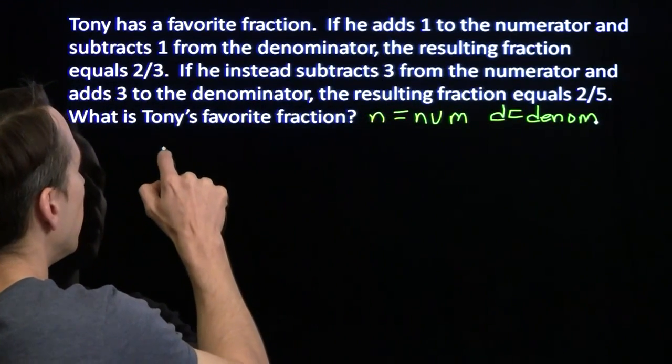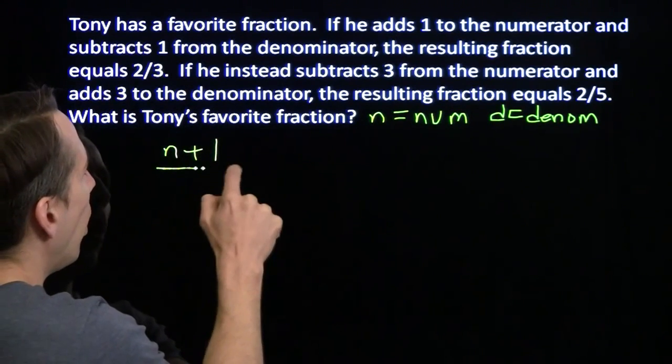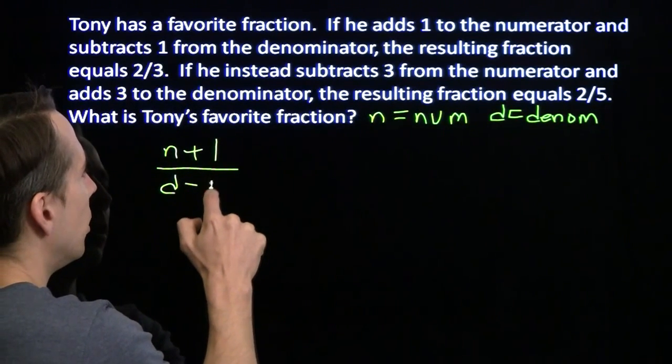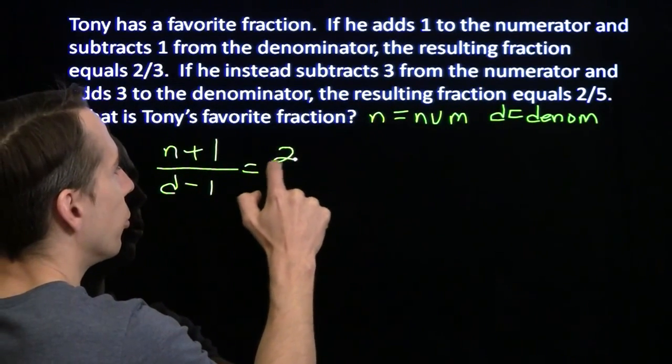Alright. Adds 1 to the numerator. Subtracts 1 from the denominator. Gets something that equals 2 thirds.